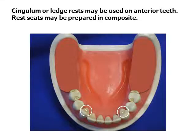In an anterior tooth with a well-defined cingulum, a chevron-shaped rest seat may be used. Ledge rest seats may also be used. These rest seats may use composite restorations for support when the enamel is thin or in teeth that are sensitive.